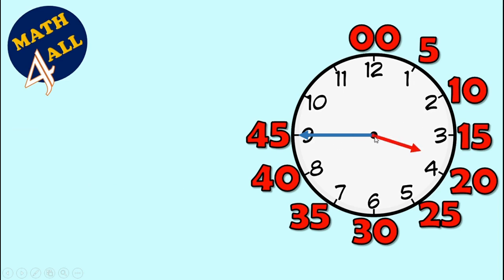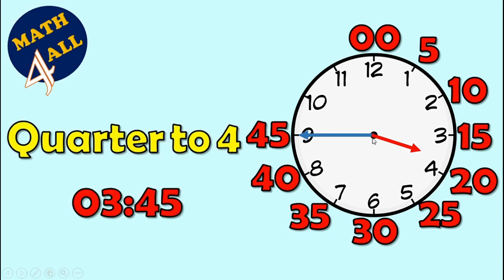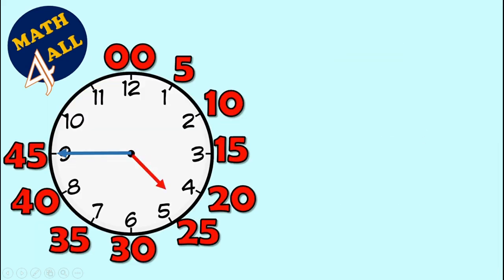What is the time? The short hand is between 3 and 4, so we're still on 3. In this case, when you find the long hand on 9, it means only quarter of an hour is left to reach 4. It's quarter to 4, or it's 3 and 45 minutes.